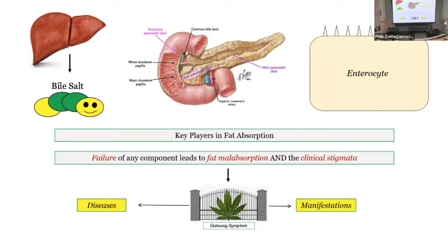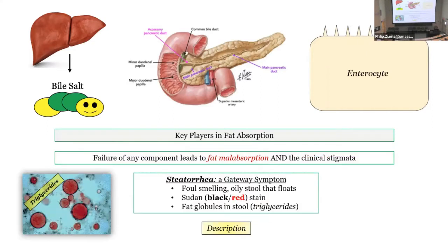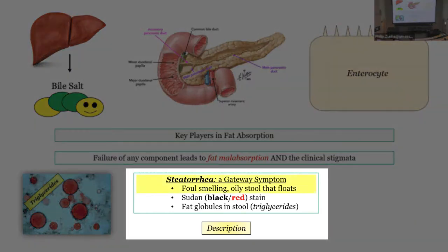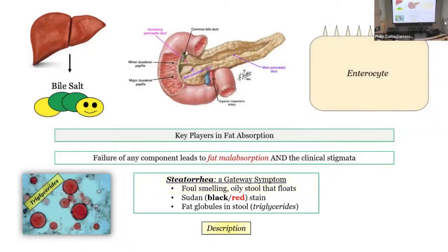Fat malabsorption — the gateway symptom — is steatorrhea. How are they going to describe it? Foul-smelling, oily stool that floats. That's the classic teaching. I also see them use the phrase 'bulky stool,' which is supposed to mean steatorrhea — because they don't want to say foul-smelling, oily, floating stool since that's too easy.